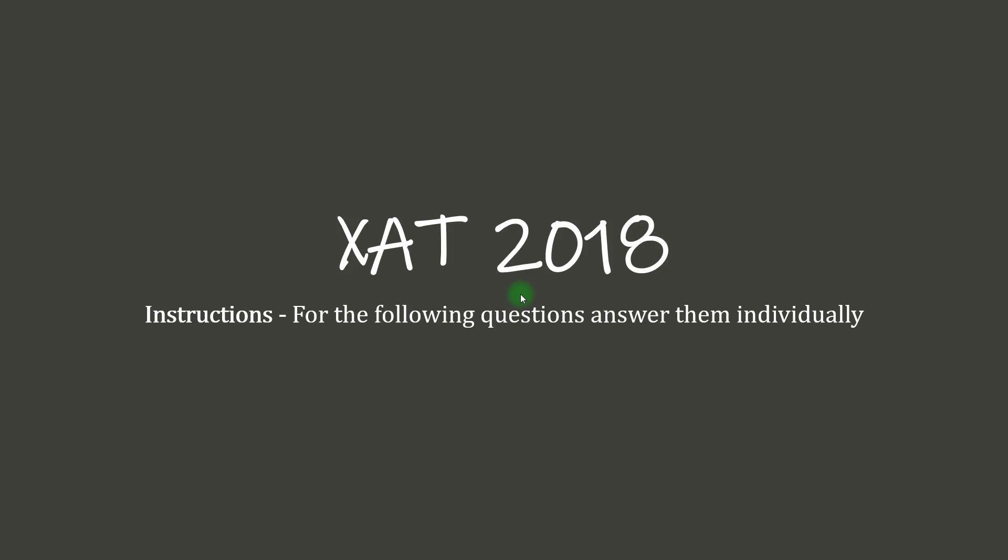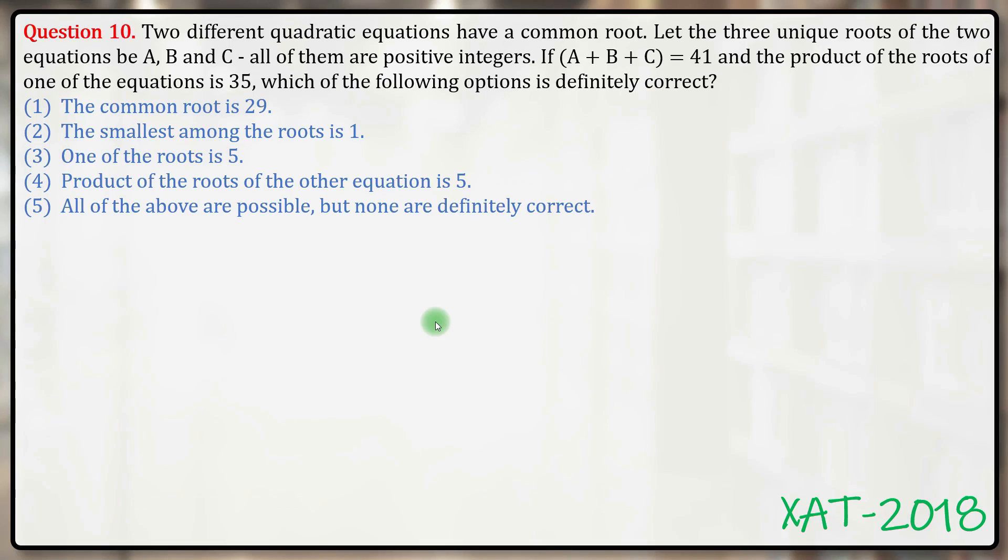Hello everyone, let's get on with this question of XAT 2018. Two different quadratic equations have a common root. Let the three unique roots of the two equations be a, b, and c, all of them are positive integers.